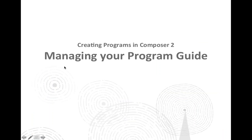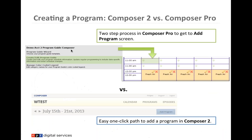That's creating users in Composer 2. Next, we'll talk about how to create programs and manage your program guide. If you were using Composer Pro or Composer Basic, you'll remember it was a two-step process to get to the add program screen. In Composer 2, it's a streamlined one-click path — there's an Add Program button at the top when you first log in.